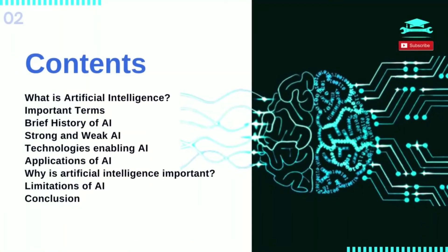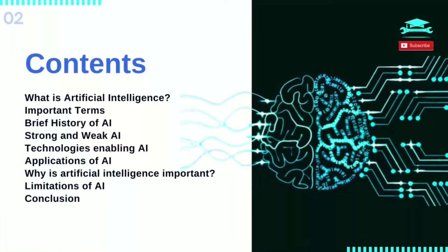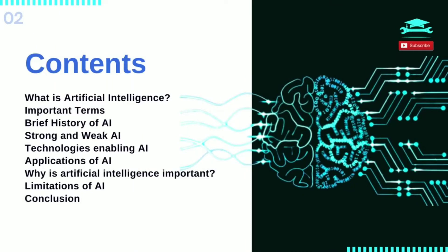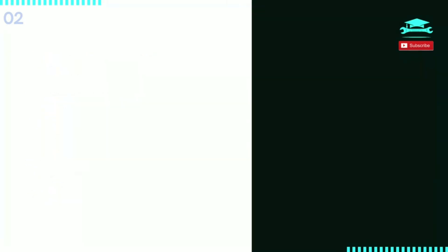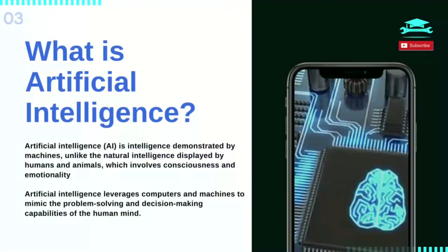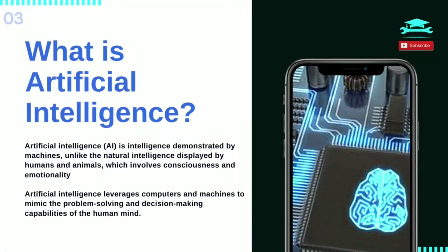In this video, we will be discussing what is artificial intelligence, associated terms, a brief history of AI, the classification of AI into strong and weak AI, technologies that enable AI, and applications, importance, and limitations of AI.